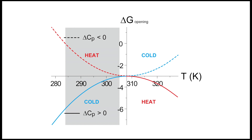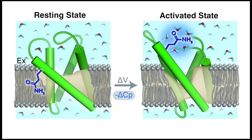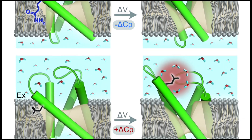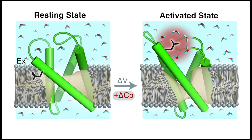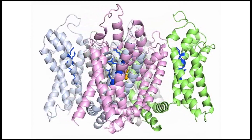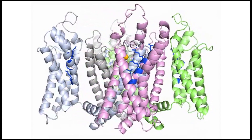Thus, for channel opening processes, a site that undergoes increased solvation when the channel opens will confer the process a negative delta Cp if it features a polar residue. In such a scenario, channel opening will be favored upon increase in temperature. Conversely, if the same site features a hydrophobic residue, its state-dependent solvation will confer a positive delta Cp, which will render channel opening favorable upon cooling. To test this idea, we took a voltage-gated potassium channel of known structure which is relatively insensitive to temperature.